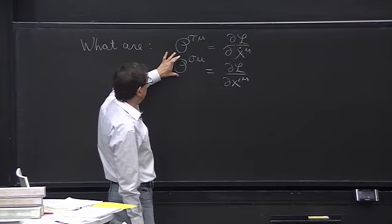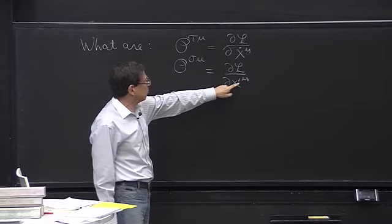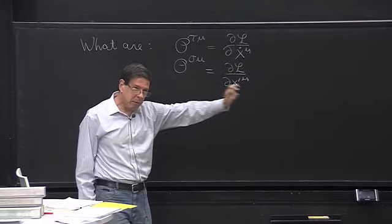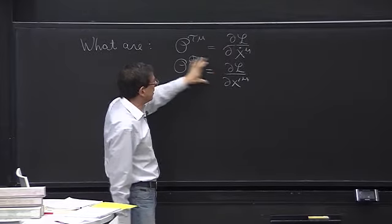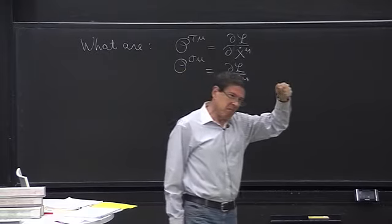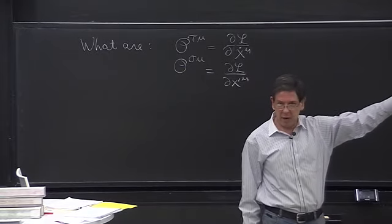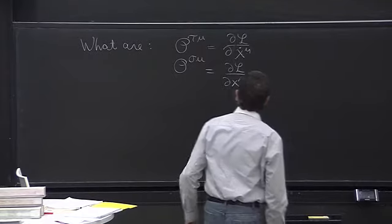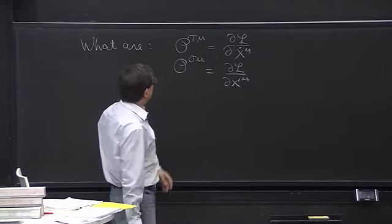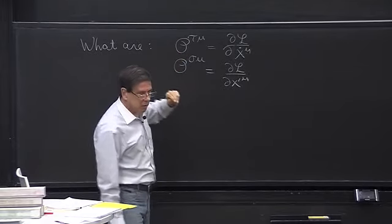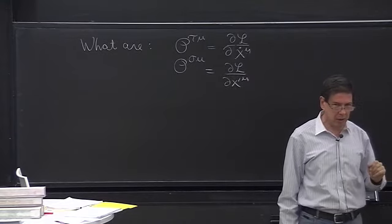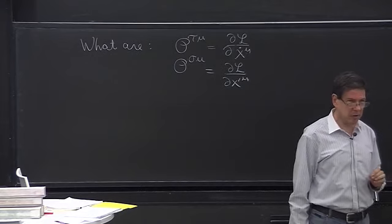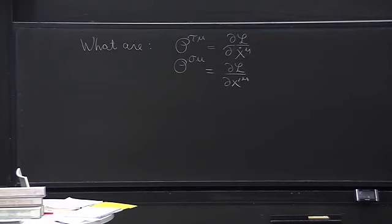We learned that p^σ was the one that had to be set to zero at the end of an open string for a Neumann boundary condition. And what we're going to learn is that tau and sigma were not just labels — they were indices — and these are conserved currents on the world sheet, conserved in the two-dimensional sense.